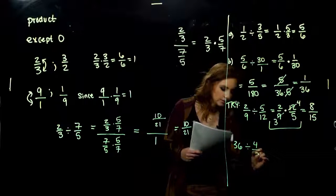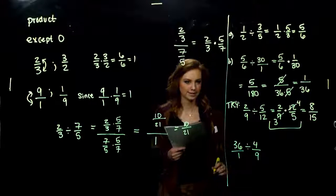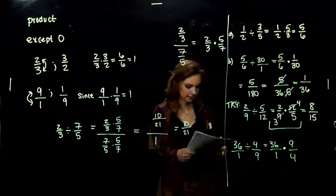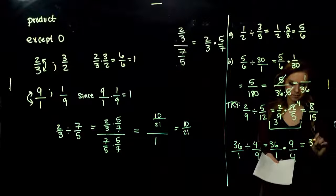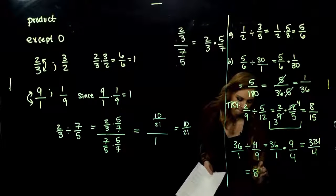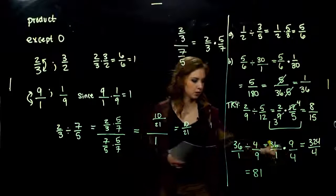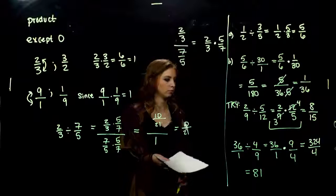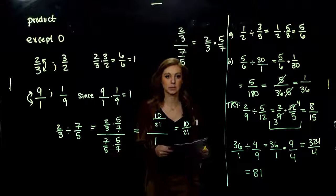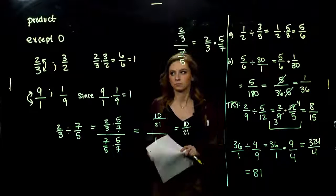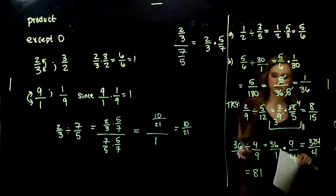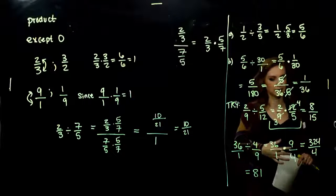Last example: 36 divided by 4 ninths. Write 36 as a fraction over 1, keep it constant, and multiply by the reciprocal of the second. Multiplying straight across the top and bottom: 324 over 4, which is 81. Or you could simplify earlier — 36 divided by 4 gives 9, and 9 times 9 is 81. However you get there, you end up at the same place. Now we can combine fractions in many ways: we need least common denominators to add and subtract, we multiply straight across for multiplication, and dividing is multiplication with one extra step — keep the first one constant and multiply by the reciprocal of the second.